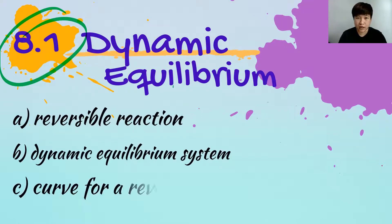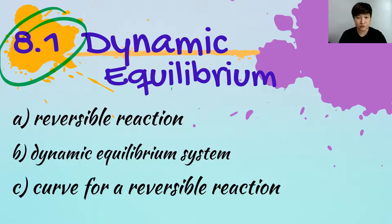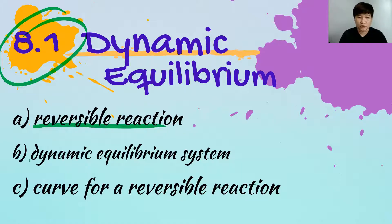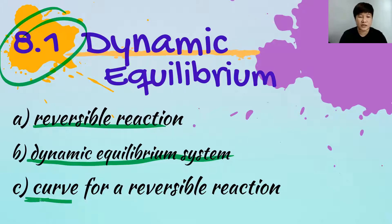We have three learning outcomes that we are going to look into. First and foremost, we are going to look at what is a reversible reaction. We will also look into what is a dynamic equilibrium system. And last but not least, we'll look into the curve for reversible reaction.